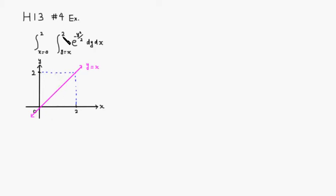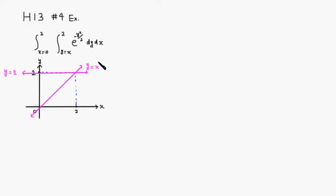Then y is going all the way up to 2, so we have the line y equals 2 — a horizontal line at 2. And x is going from 0 to 2. So you can see the region we're looking at is a triangular region we are integrating over.